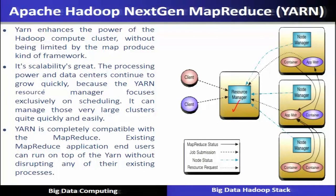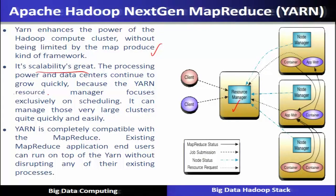The next important component of Hadoop is YARN. YARN provides two important services: resource management — which is at the core — and scheduling, determining how different resources are allocated to MapReduce jobs. YARN enhances the power of the Hadoop compute cluster without being limited by the MapReduce framework. Its scalability is great in the sense that the processing power and data center continue to grow quickly because YARN's resource manager focuses exclusively on scheduling. YARN is completely compatible with MapReduce and existing applications can run on top of YARN without any disruption.